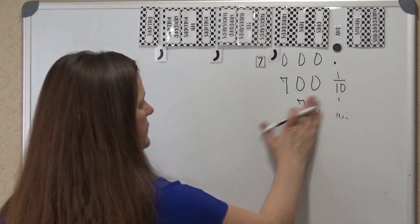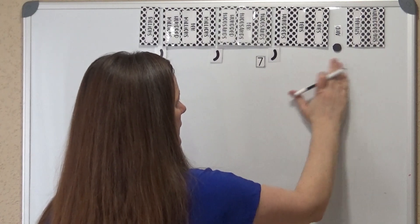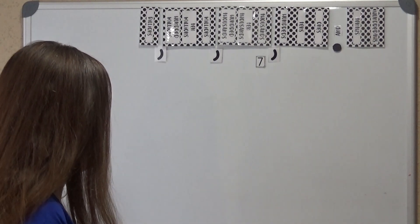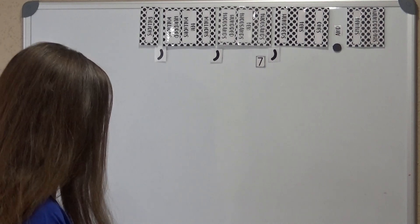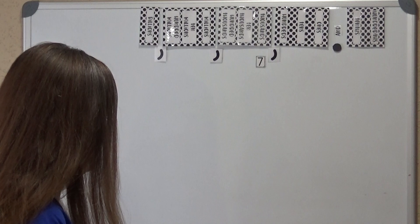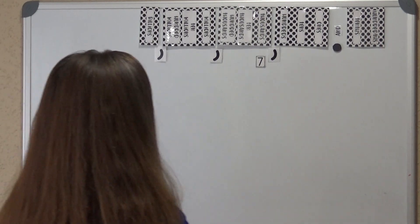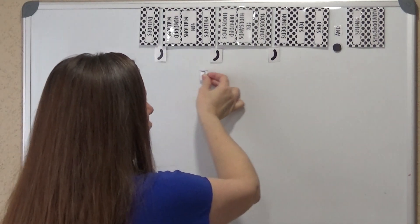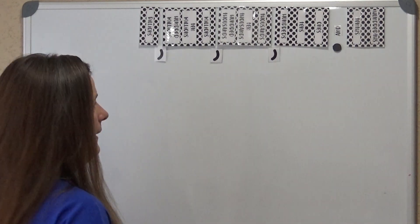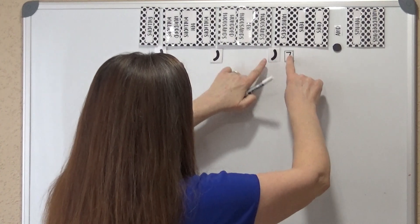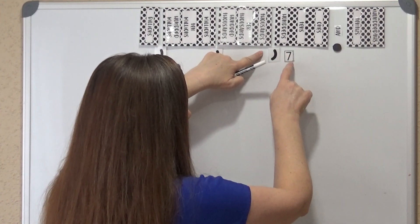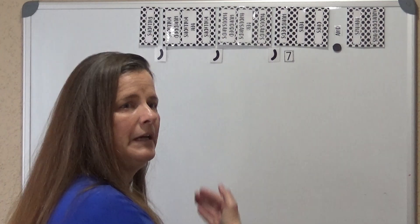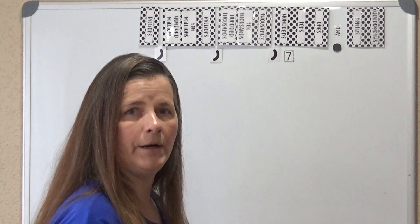So now we have just gone over place value. The place value position is 10 times the position to the right, and we've also gone over that the place value position is one-tenth of the value to its left. When we're going to the left, it's getting larger. When we're going to the right, it's getting smaller when we're comparing. This number is going to be smaller than that number; that number is going to be larger than this number. When you go left it gets bigger; when you go right it gets smaller.